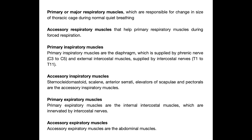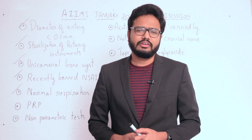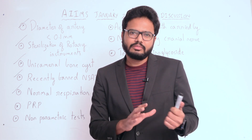Primary inspiratory muscles include the diaphragm, supplied by the phrenic nerve (C3 to C5), and external intercostal muscles, supplied by intercostal nerves T1 to T11. We also have accessory inspiratory muscles. Primary expiratory muscles include internal intercostal muscles, innervated by intercostal nerves, along with accessory expiratory muscles. The nerve supply is considered very important.